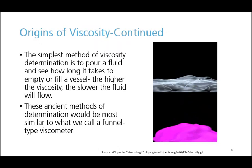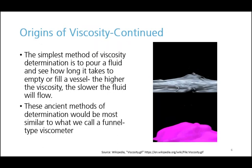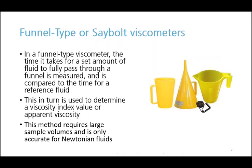These ancient methods of viscosity determination — there are historical references to pouring fluids and observing differences in their behavior. These ancient methods would be most similar to what we today call a funnel type viscometer. In the funnel type viscometer, the time it takes for a set amount of fluid to fully pass through a funnel is measured and compared to the time it takes for a reference fluid. This in turn is used to determine a viscosity index value or apparent viscosity. This method has a few limitations — it requires large sample volumes and is only accurate for simple, sufficiently viscous Newtonian fluids.